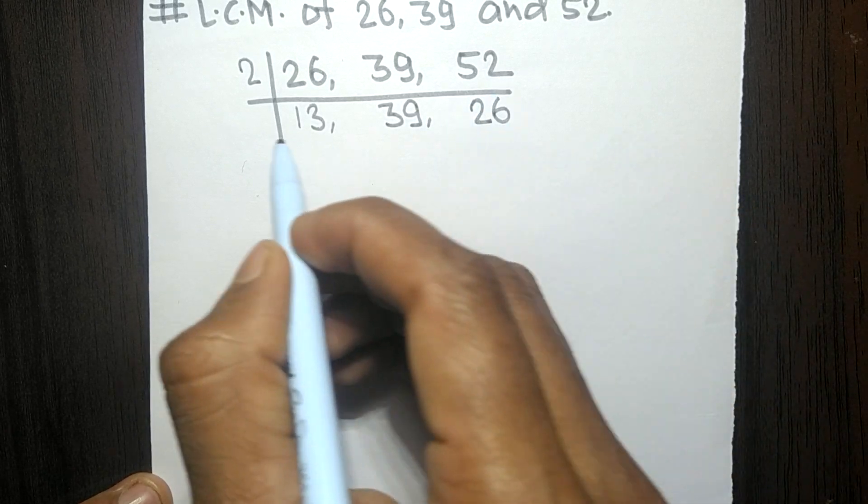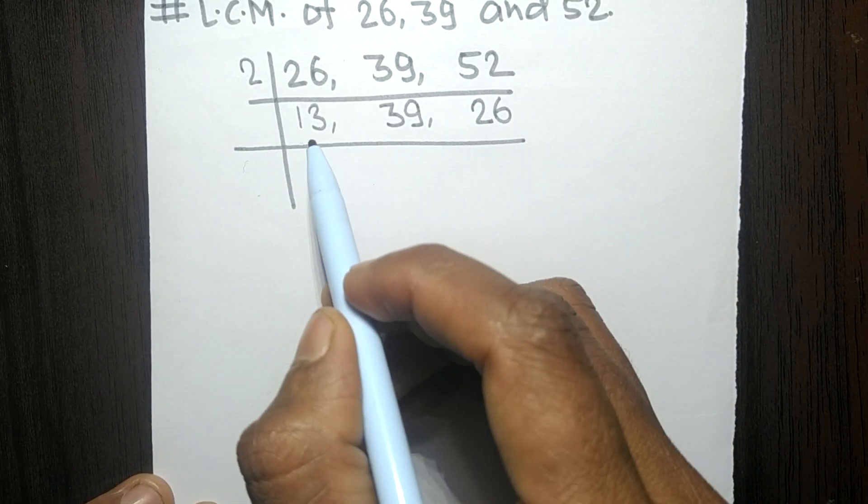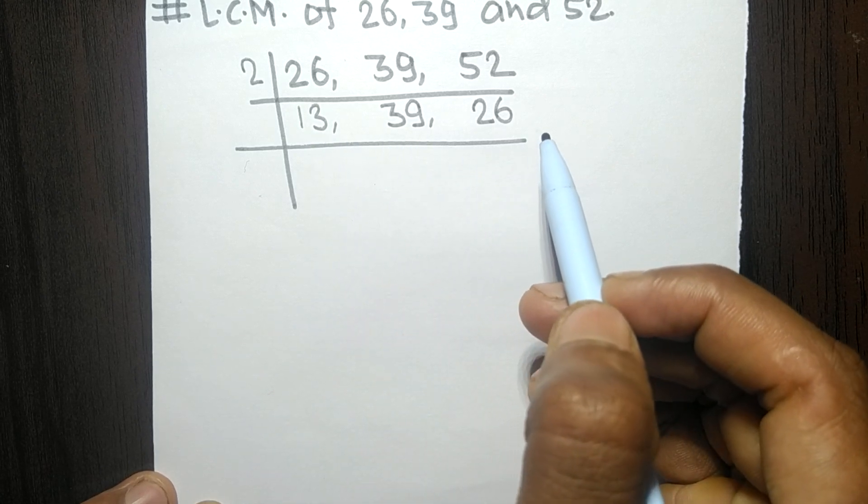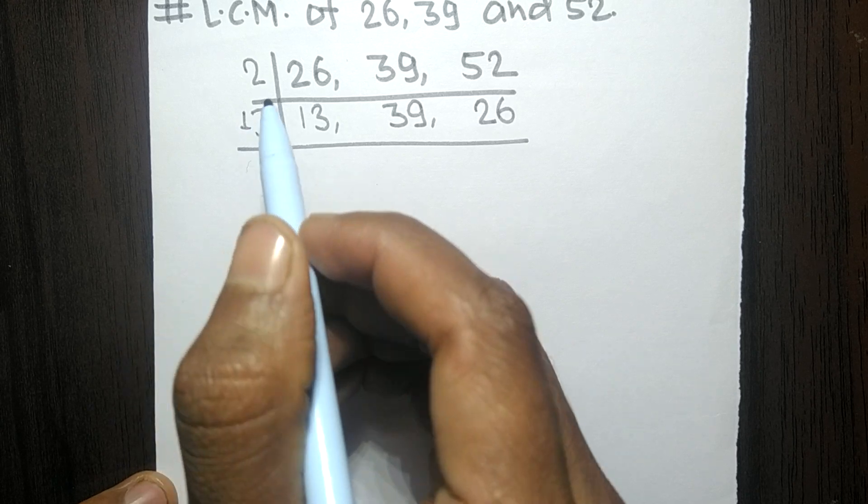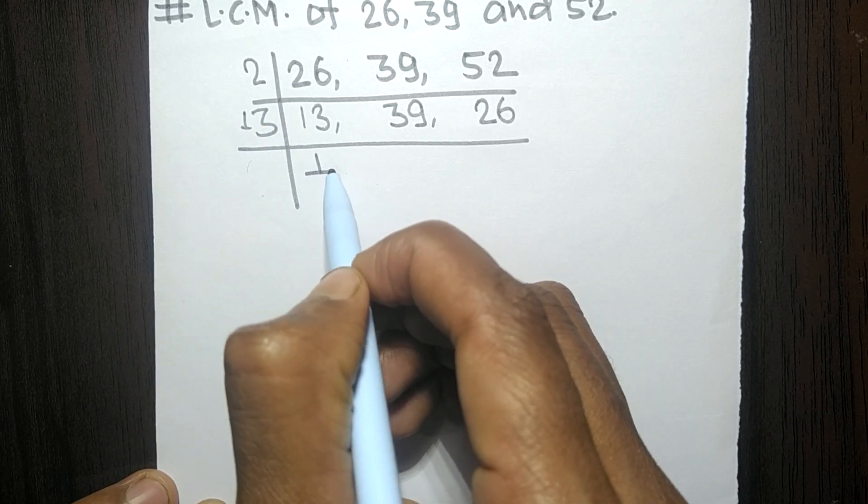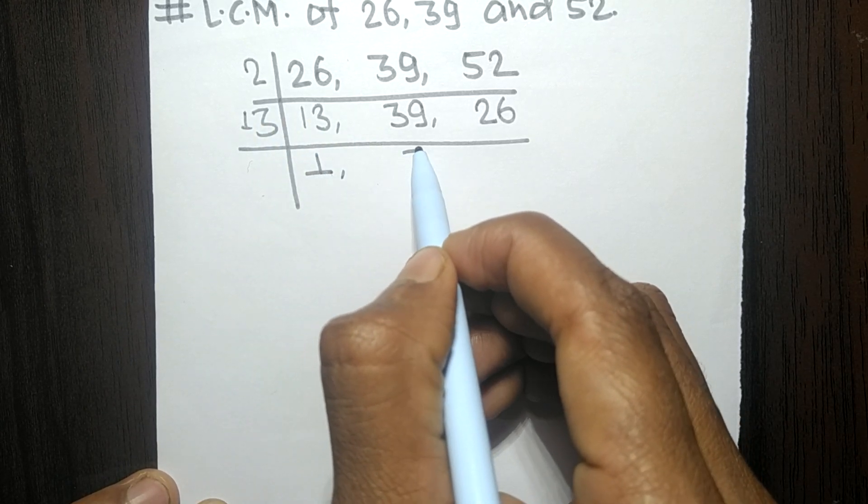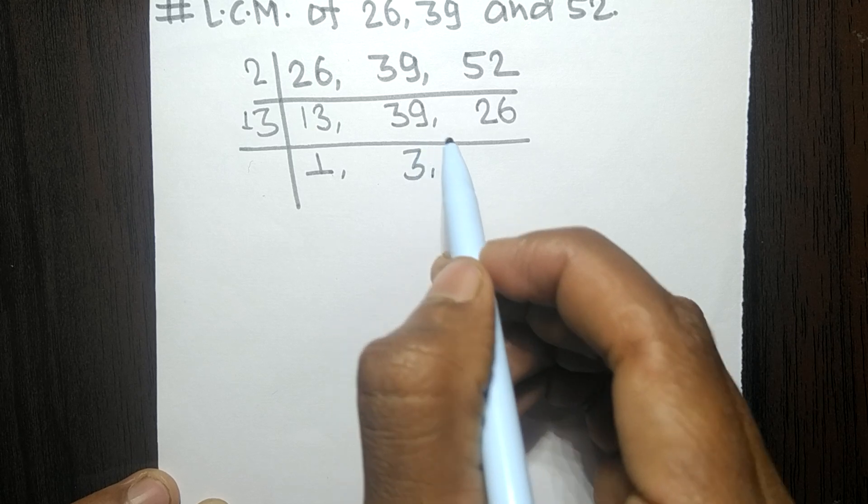So now these all numbers are exactly divisible by 13. So 13 times 1 means 13, 13 times 3 means 39, 13 times 2 means 26.